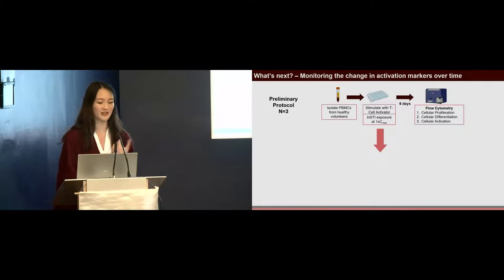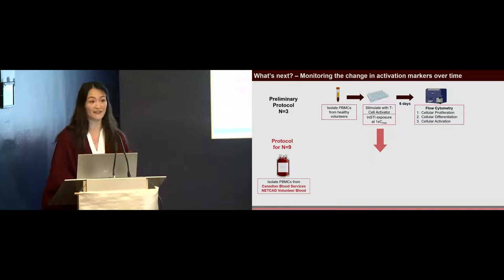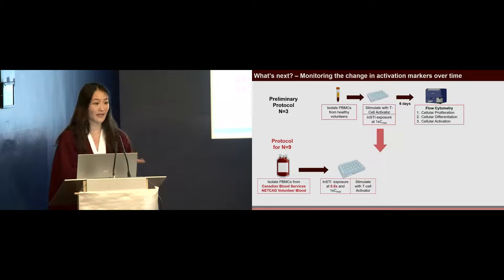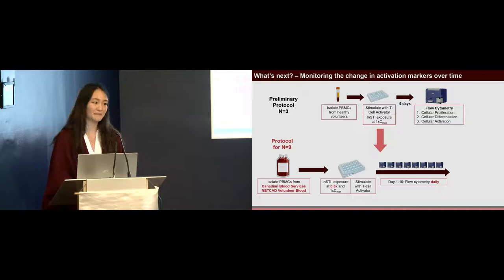To get a better picture of what is happening, I plan on doing nine individual replicates where I isolate PBMCs from Canadian Blood Services volunteer blood. I would then expose the INSTIs at both 0.5 and 1x Cmax, stimulate with T-cell activator, and then I would do flow cytometry on a daily basis instead of just once. I can monitor how exactly the activation, proliferation, and differentiation is changing over time. With this, we can obtain a clearer picture of how INSTIs are potentially affecting immune health and proliferation, which is not generally studied in this field.